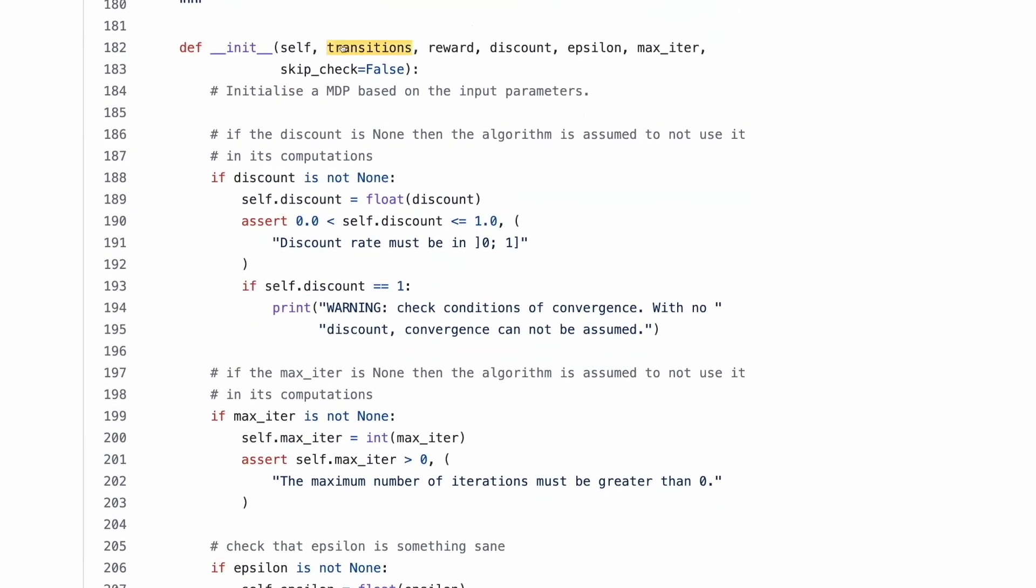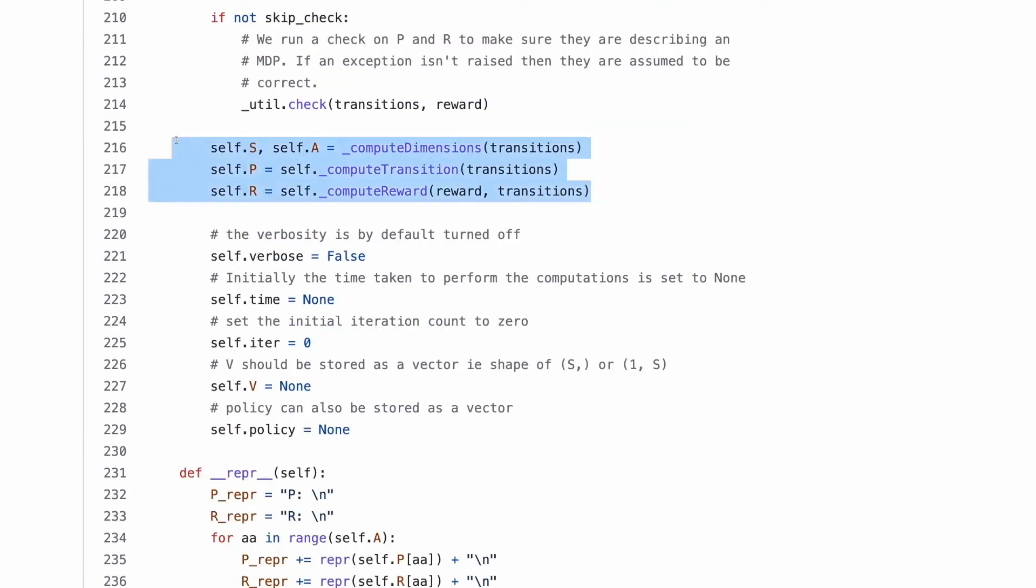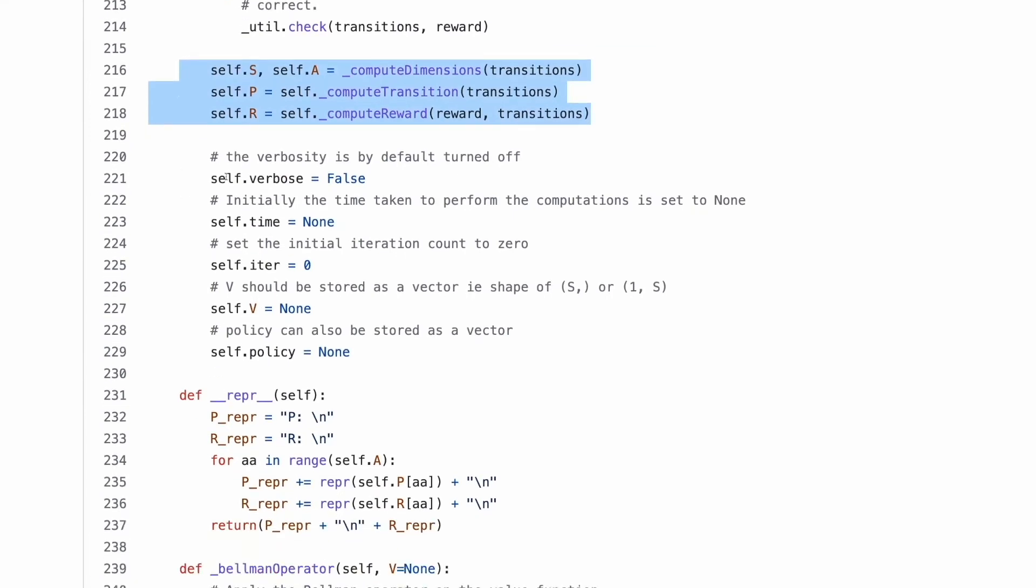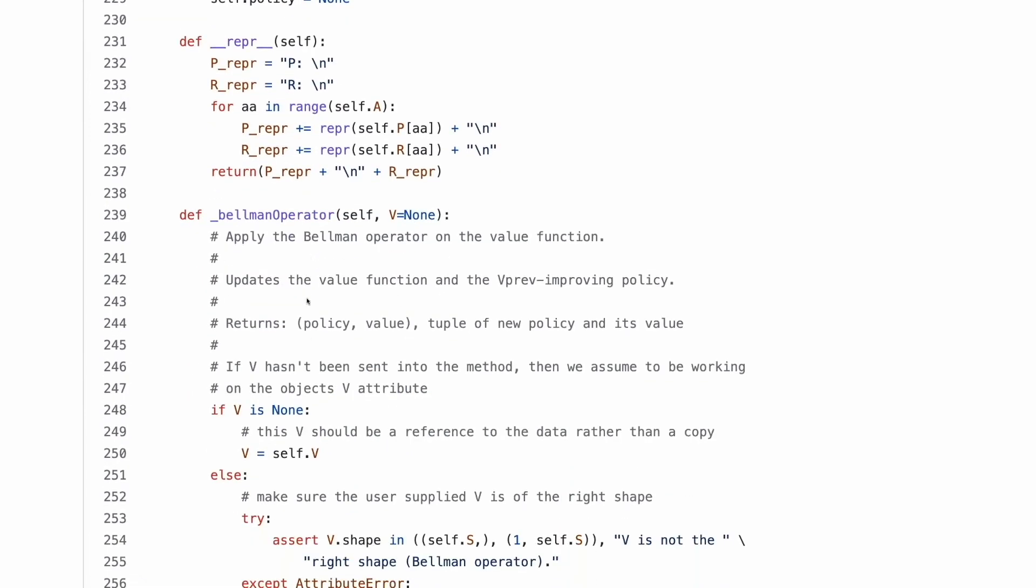Initialization, we pass transition, reward. We initialize these matrices. We set verbosity. Then representation is a to string method.